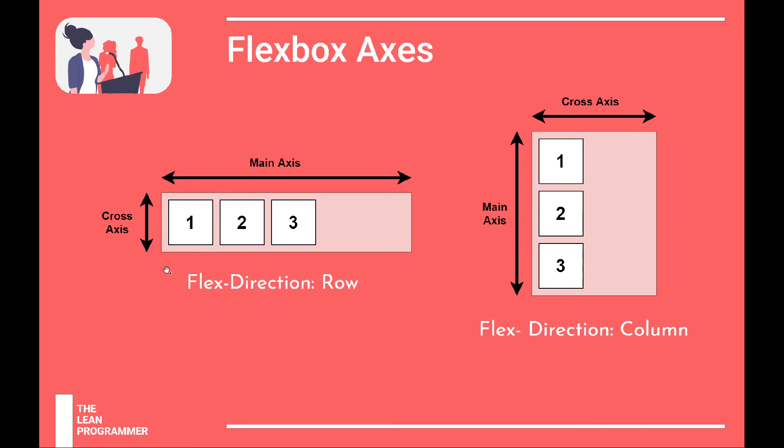There is a main axis and then there is a cross axis. For example, a main axis will be the main axis where you could align the items and all those things. So there is a main axis that is going to be the main of your container or the flex container.